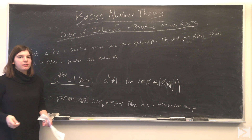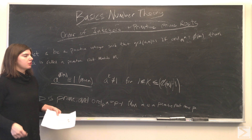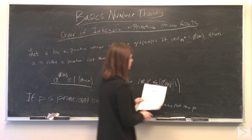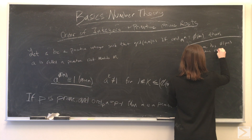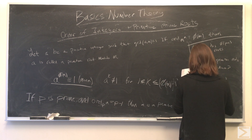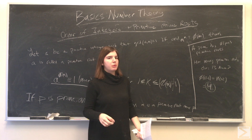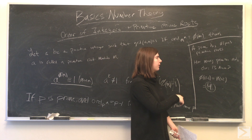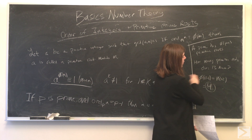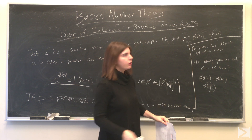For problems, you might be asked to confirm that a number is a primitive root, or to find how many primitive roots a number has. A prime p has phi of (p minus 1) primitive roots. For example, if you're asked how many primitive roots does 13 have, you find phi of 12, which equals 4. So 13 has 4 primitive roots.